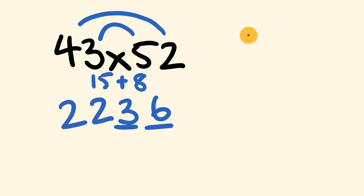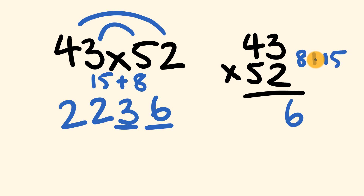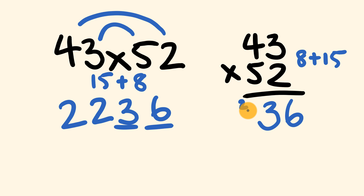Now let's check using cross multiplication on 43 multiplied by 52. Units first: 3 times 2 is 6. Cross: 2 times 4 is 8 and 3 times 5 is 15 — that's 15 plus 8 equals 23, so 3 goes down and we carry a 2. Finally, 4 times 5 is 20 plus the carried 2 equals 22. Answer: 2236.